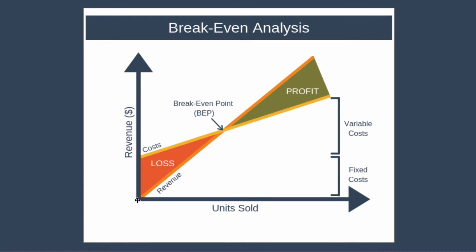First, we have the x-axis showing us the number of units sold. Then we have the y-axis representing sales revenue generated in dollars. Next we have the revenue line, which shows the amount of revenue generated as an increasing number of units is sold.